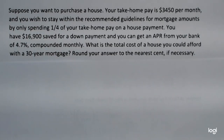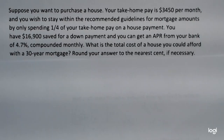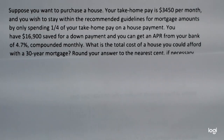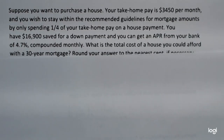Suppose you want to purchase a house. Your take-home pay is $3,450 per month and you wish to stay within the recommended guidelines for mortgage amounts by only spending one-fourth of your take-home pay on a house payment. You have saved $16,900 for a down payment and you can get an APR of 4.7% compounded monthly. What is the total cost of a house you could afford with a 30-year mortgage?